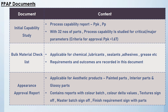The thirteenth document is the appearance approval report, applicable for aesthetic products like painted products, interior products, dashboards, cabin interior products, and glass or glassy products. This report contains a complete sign-off with values of initial samples like color batch, color delta values, textures, seeds, patterns, master batch sign-off for plastic category, and finish requirement sign-off for exterior parts requiring scratch elimination. This complete sign-off is recorded in the appearance approval report format and mutually signed between customer and supplier.